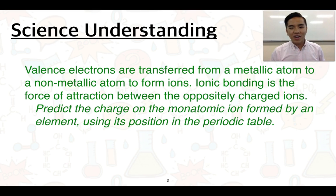This is our first science understanding. Valence electrons are transferred from a metallic atom to a non-metallic atom to form ions, and ionic bonding is the force of attraction between oppositely charged ions. What we need to be able to do is predict the charge on the monatomic ion formed by an element using its position in the periodic table.